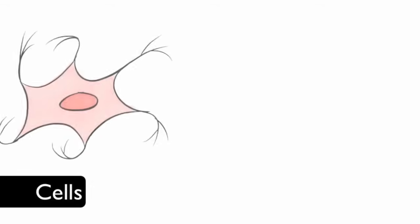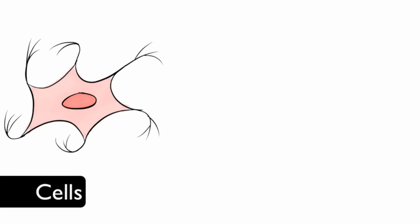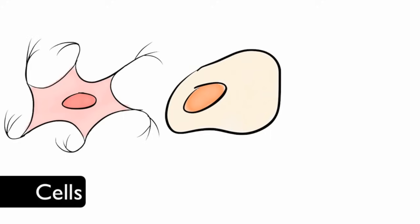Cells are the smallest living part of an organism. Some examples of cells in the human body are brain cells, lung cells, and bone cells.